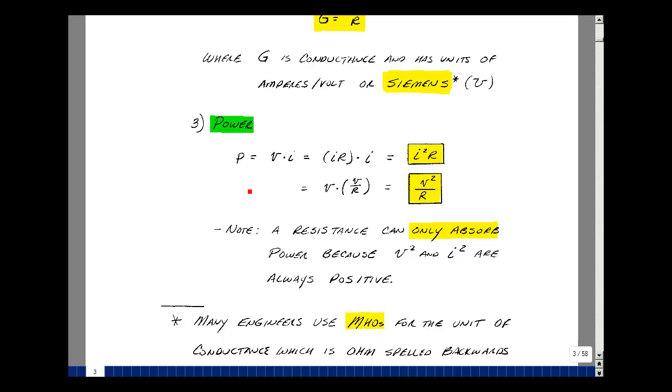We also take a look at some of our power relationships, because power is voltage times current. Remember, V is equal to IR, so then we could also write power as I squared times R, or we could substitute in that I is equal to V over R and get V squared over R.